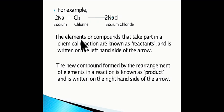The elements or compounds that take part in a chemical reaction are known as reactants, and are written on the left hand side of the arrow. Here sodium and chlorine are reactants. The new compound formed by the rearrangement of elements in a reaction is known as product, and is written on the right hand side of the arrow.